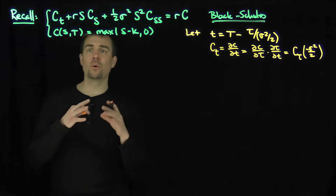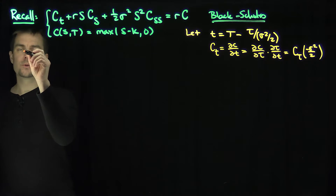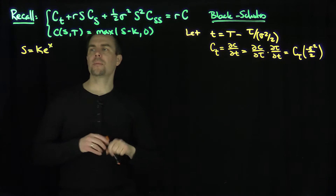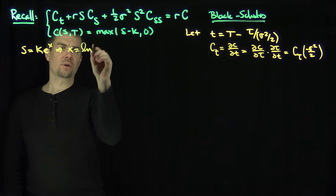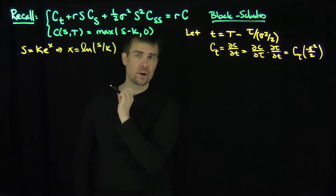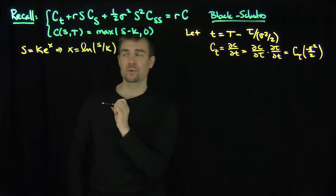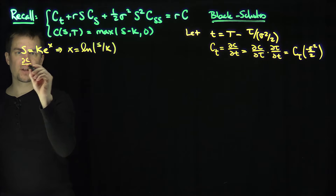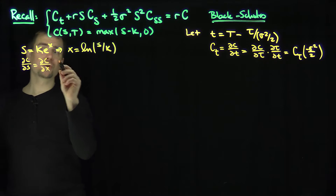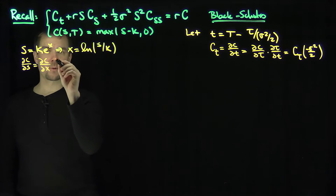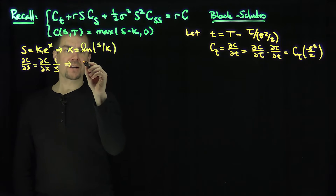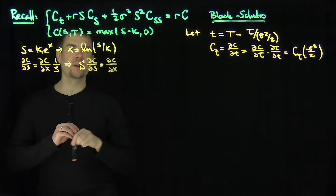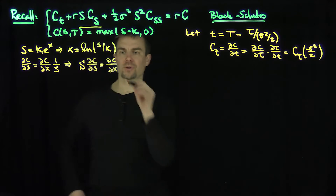The second change of variable is a classical one that you see in the Cauchy-Euler equations. We're going to let s equal k times e to the x, which is equivalent to saying x is the natural log of s over k. This quantity will appear later in the final form of Black-Scholes. Now, partial c partial s equals (partial c partial x) times (partial x partial s), and partial x partial s is just 1 over s. So we get the beautiful relationship that s times partial c partial s is simply partial c partial x.